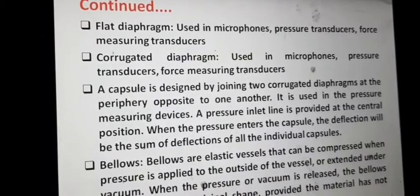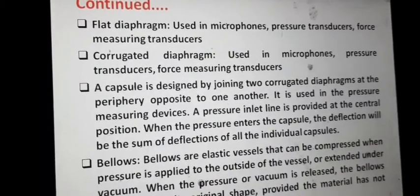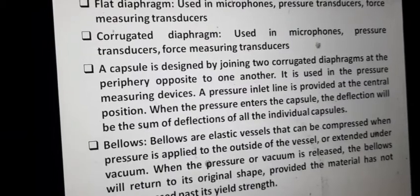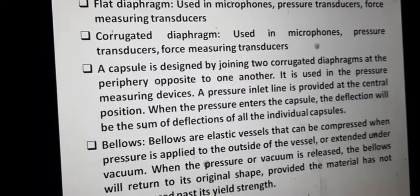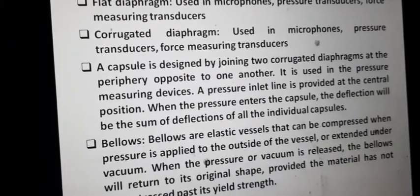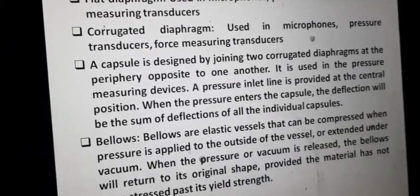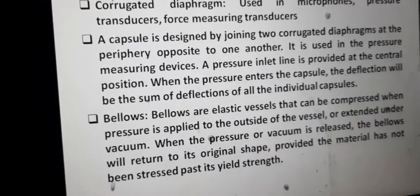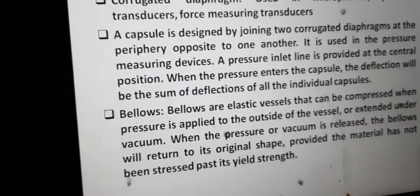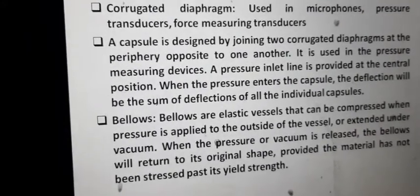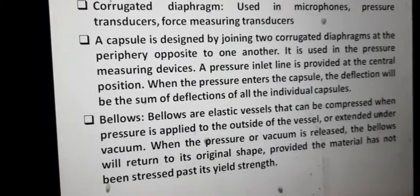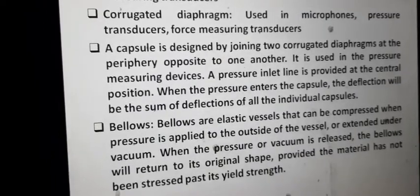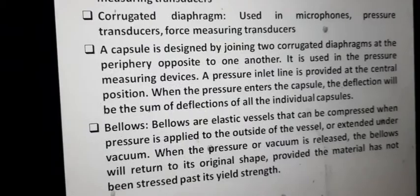Flat diaphragms are used in microphones, pressure transducers, and force measuring transducers. Corrugated diaphragms are used in the same applications. Capsules, which are two corrugated diaphragms joined opposite to one another, are used in pressure measuring devices — the pressure inlet is provided at the middle position so that when pressure enters the capsule it deflects, and from the displacement you can get the proportionate pressure reading. Bellows are elastic vessels that compress when pressure is applied at the outside or extend under vacuum, and they also act as actuating mechanisms by producing movement in response to force or pressure.